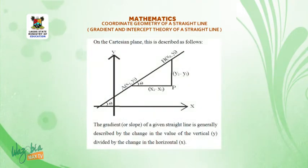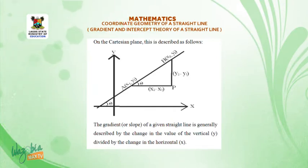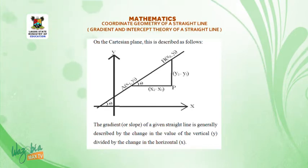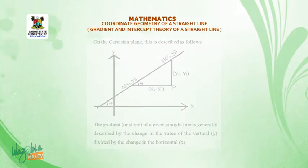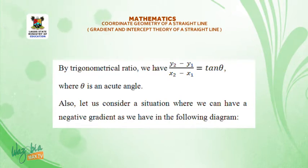On the Cartesian plane, the gradient or slope of a given straight line is generally described by the change in the vertical y divided by the change in the horizontal x. By trigonometric ratio, we have (y₂ - y₁) / (x₂ - x₁), which is equal to tan θ, where θ is an acute angle.